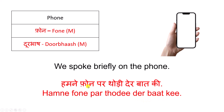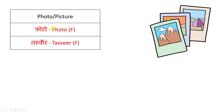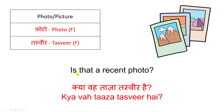Phone — Photo — or picture. Photo — तस्वीर। Is that a recent photo? क्या वह ताज़ा तस्वीर है? तस्वीर — Photo.